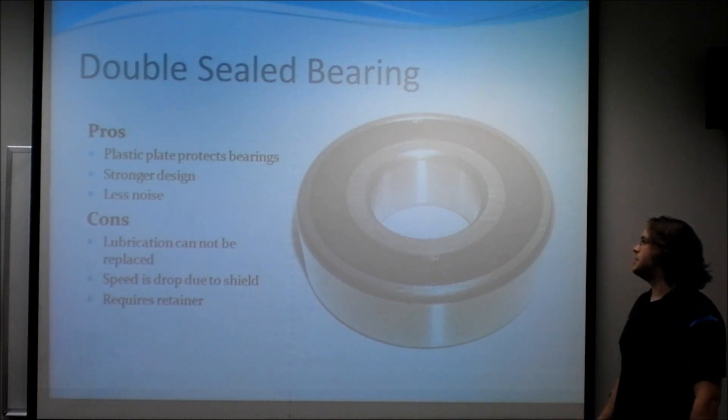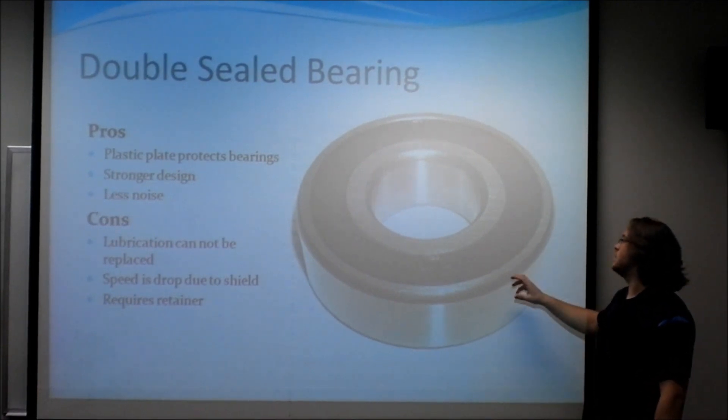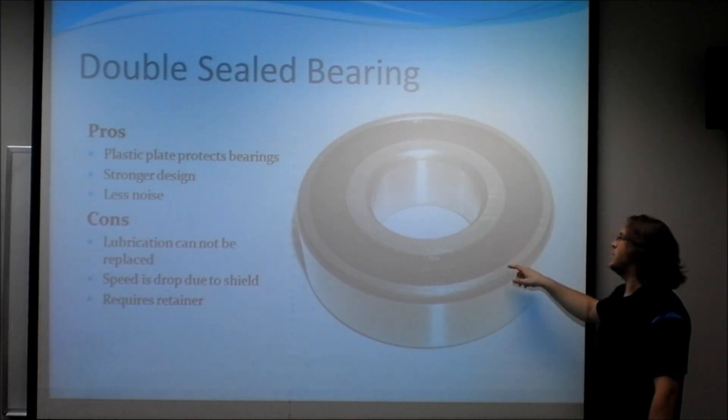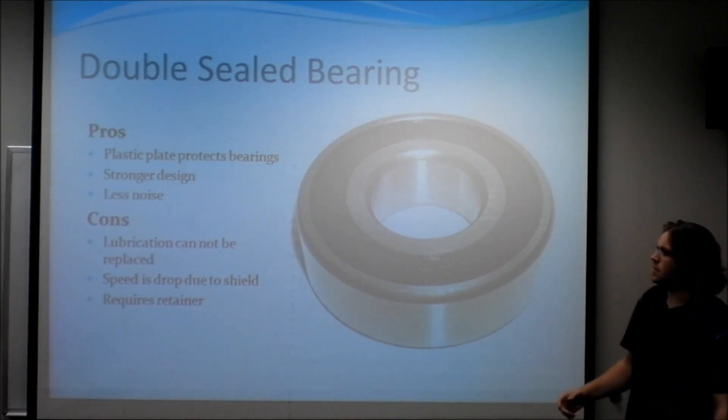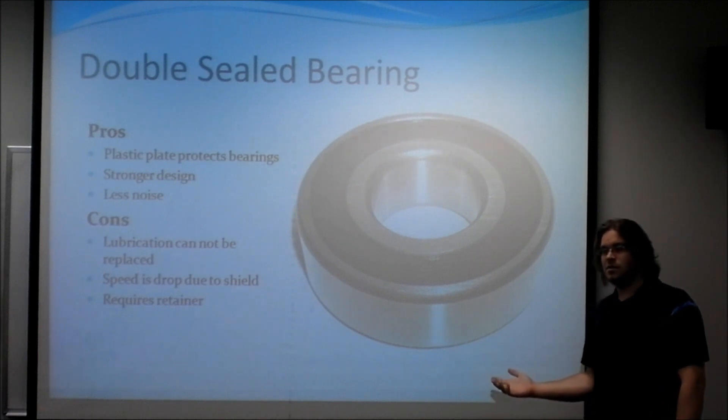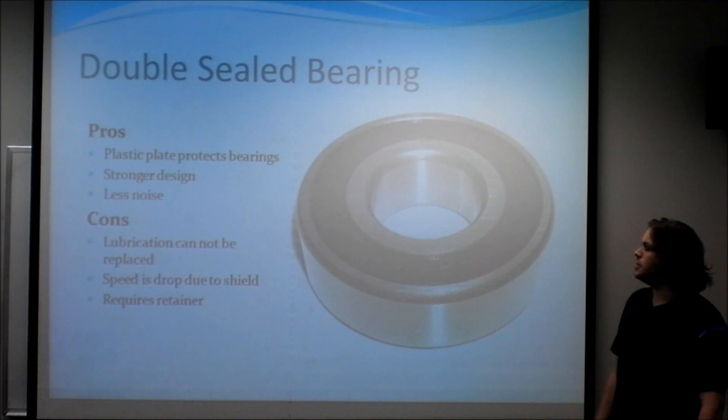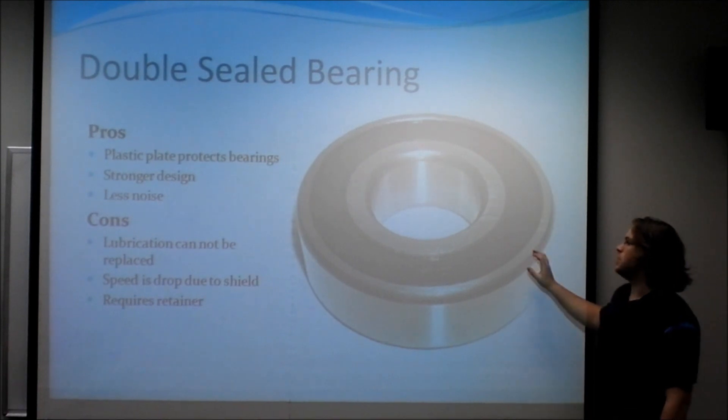The next one is a double-sealed bearing. Similar to the shielded bearing, but instead of metal, it's used as plastic. The advantage of plastic is that it's actually quieter. The speed is reduced even more than what the metal one or the metal bearing would be used, but this one reduced noise.